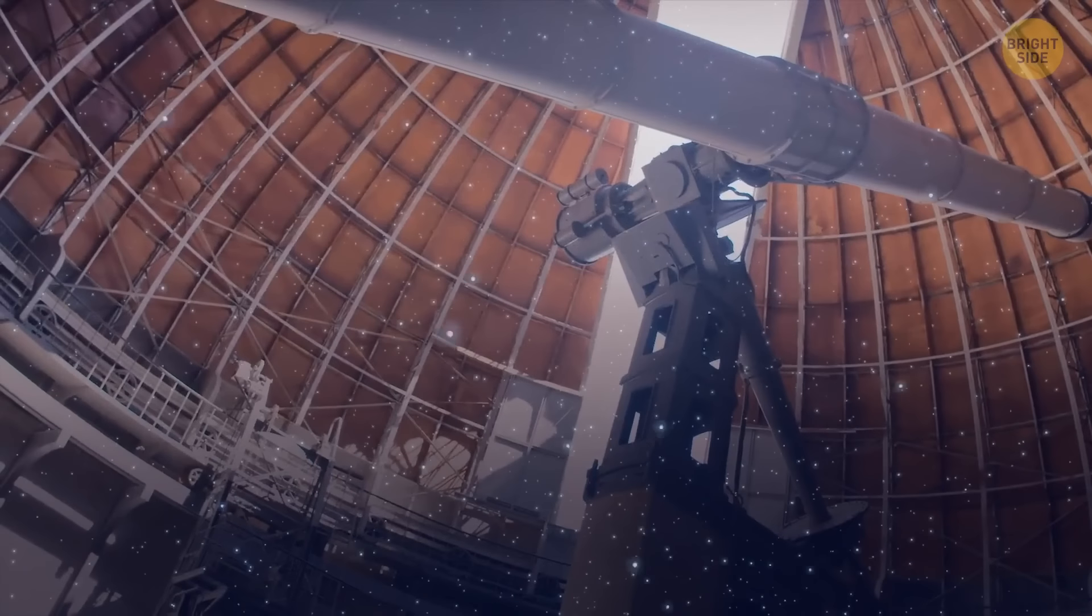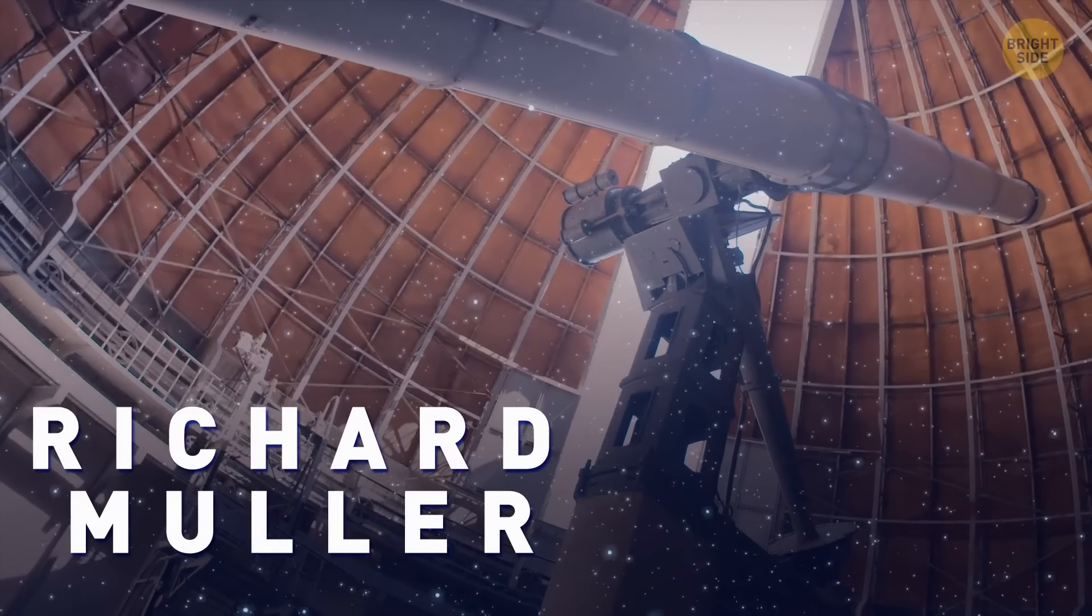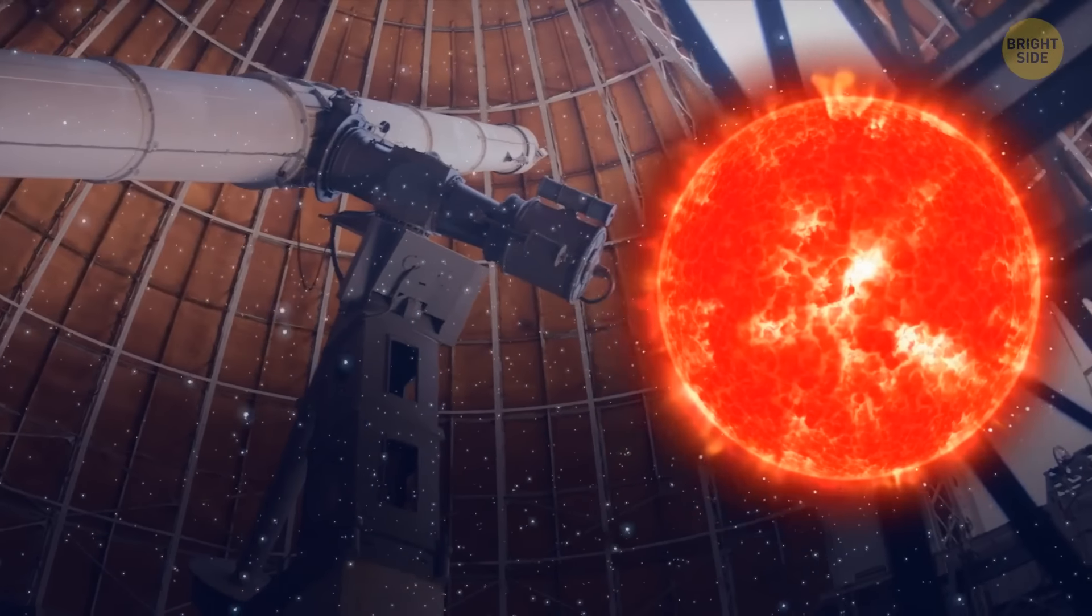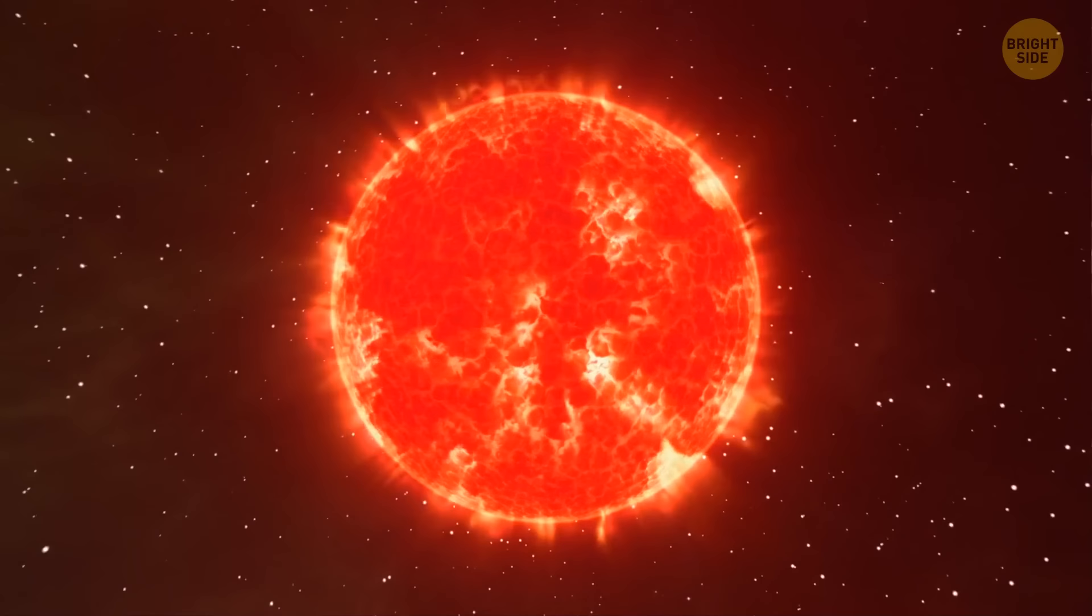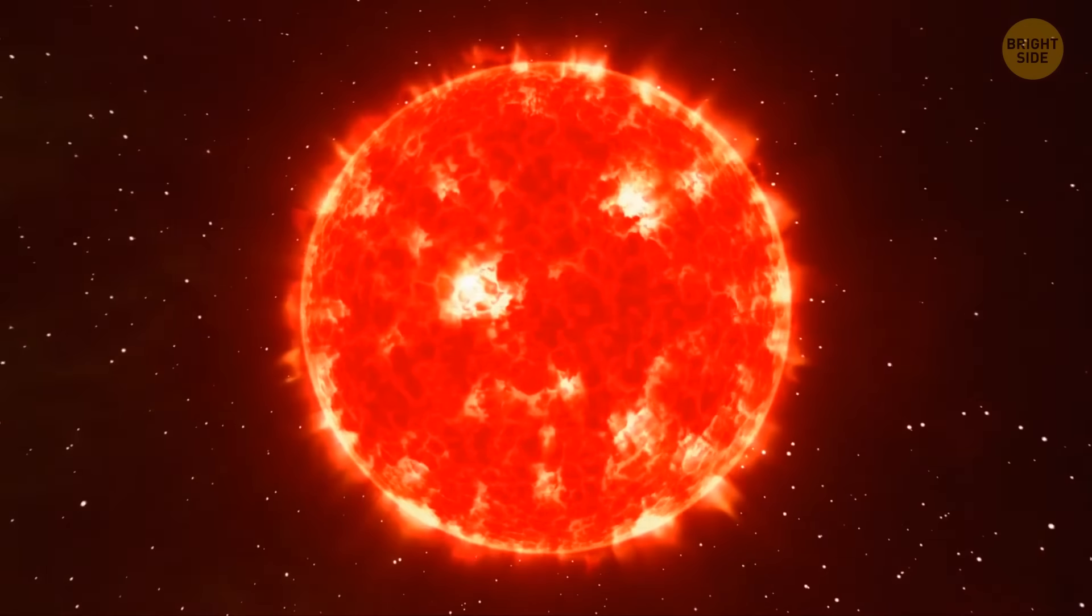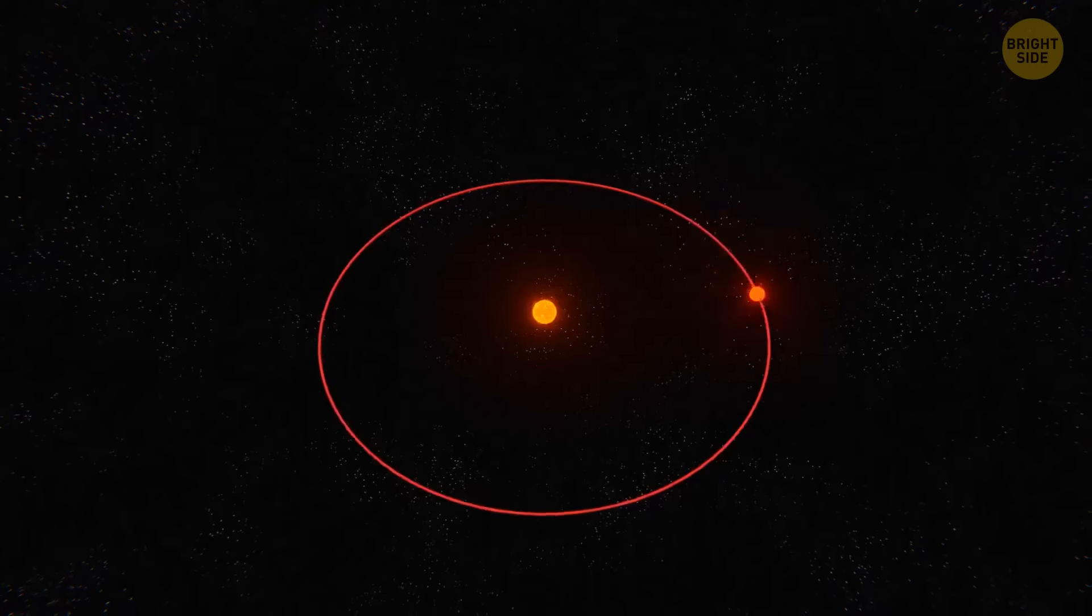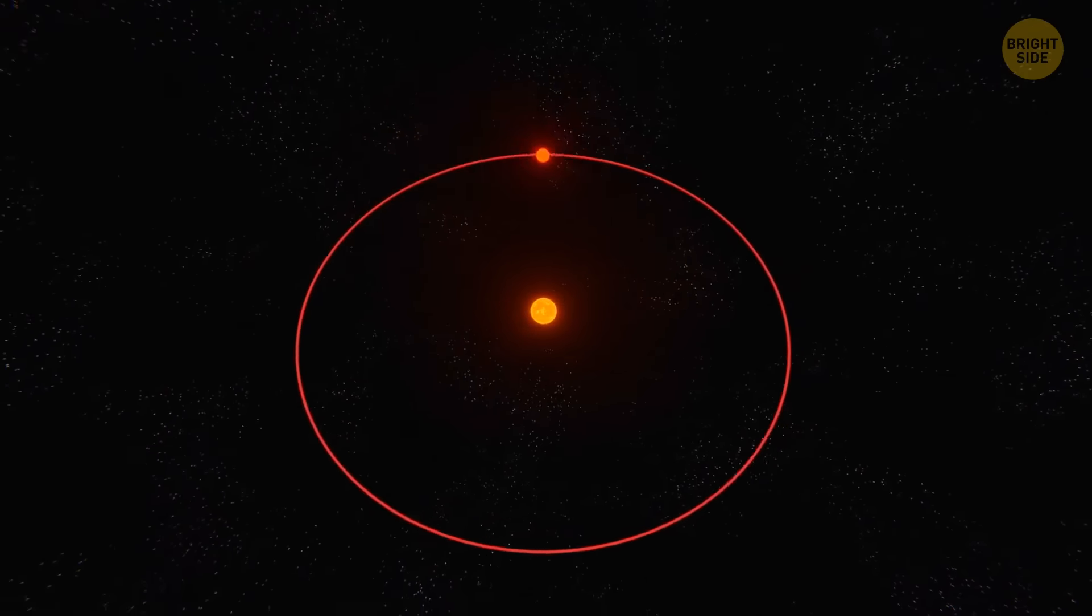Then, an astronomer, Richard Muller, suggested that there may be something that caused the events. A certain celestial body. According to him, it could be a dwarf star that we can't see because of how dim it is. It could be located about one and a half light-years away from us.